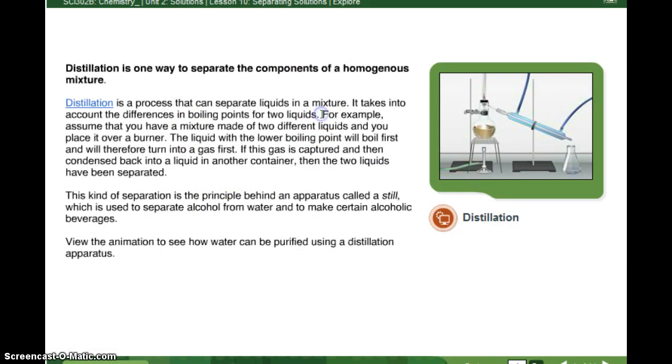All right, so let's keep reading their paragraph. For example, assume that you have a mixture made of two different liquids, and you place it over a burner. The liquid with the lower boiling point will boil first, and will therefore turn into a gas first. If this gas is captured, and then condensed back into a liquid in another container, then the two liquids have been separated. So again, the alcohol boils off first, it goes in this tube, it cools off, it drips into here. When you hit 79 degrees, you have all pure alcohol in here, all pure water in there. It's kind of cool. This kind of separation is the principle behind an apparatus called a still, which is used to separate alcohol from water and to make certain alcoholic beverages, which of course we are not telling you to consume or anything like that, and in the lab, when I'm talking about alcohol, I'm talking about isopropyl alcohol, like rubbing alcohol that you use to disinfect. View the animation to see how water can be purified using a distillation apparatus.